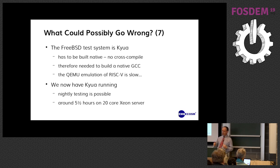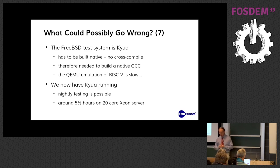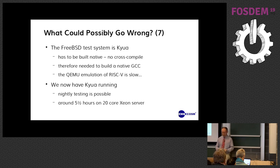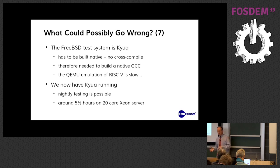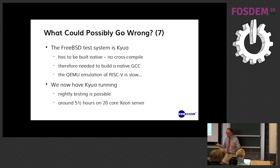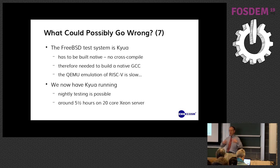We're not in the business of 'it sort of works' — we want to test properly. Kyua is the FreeBSD test system, and one thing we found is that it really doesn't cross-compile; it expects to be built natively. So we had to create a compiler toolchain to run on the actual QEMU, cross-compile that toolchain, and then run GCC on QEMU emulating RISC-V to build Kyua. It's quite big and RISC-V emulation is quite slow, so we had to leave it running for several days. That binary is now built, locked away in a vault — we do not want to build it again. But we now have Kyua running with nightly testing; it takes about five and a half hours on a 20-core Xeon server, which is fine because we're asleep at that time. There are bugs to fix but broadly FreeBSD is working.